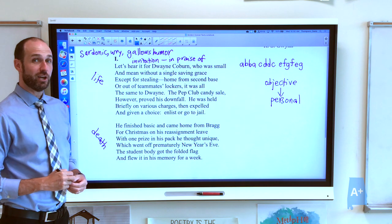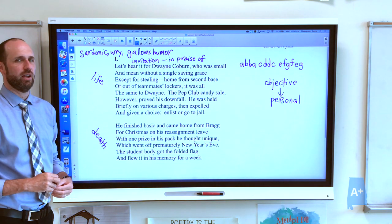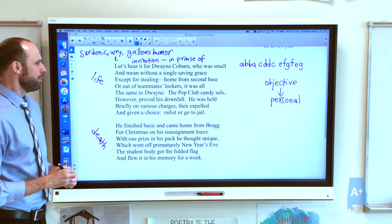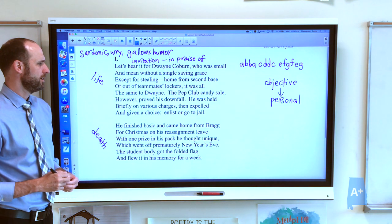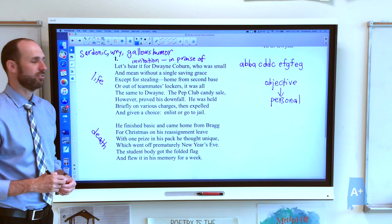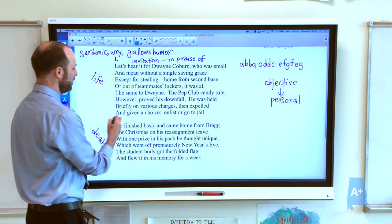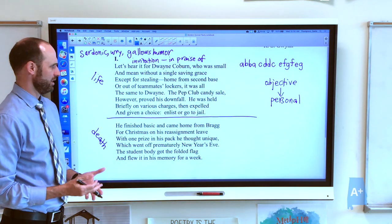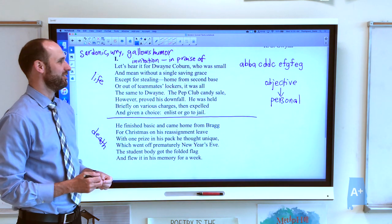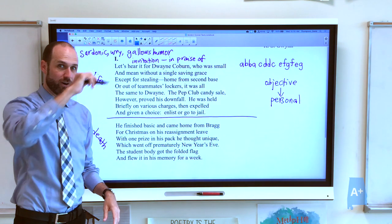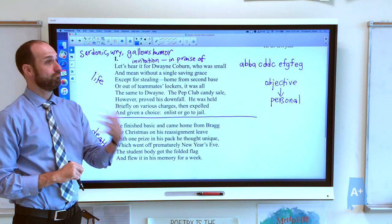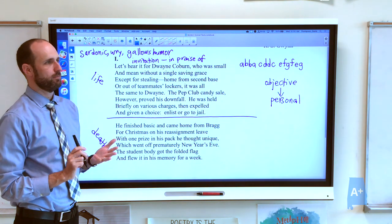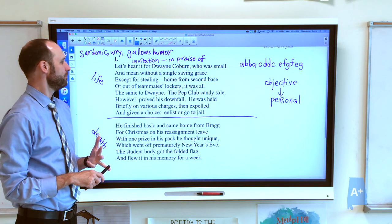Let's hear it for Dwayne Coburn, who was small and mean without a single saving grace, except for stealing home from second base or out of his teammates' lockers. It was all the same to Dwayne. The pep club candy sale, however, proved his downfall. He was held briefly on various charges, then expelled or given a choice: enlist or go to jail. Kind of a sad life of Dwayne Coburn. He's small and mean and doesn't really have any good qualities, but he's good at stealing.